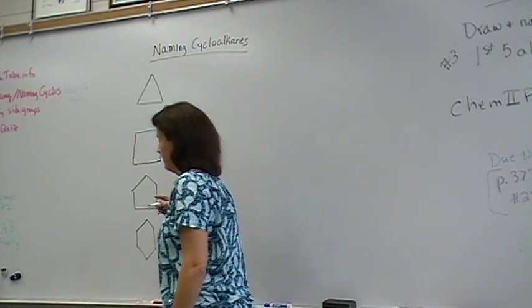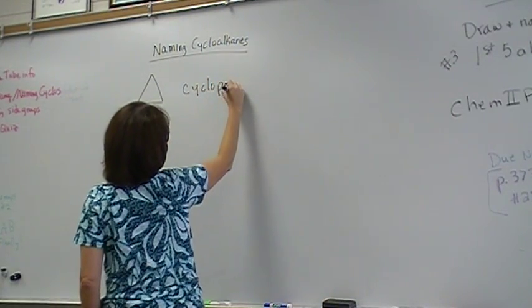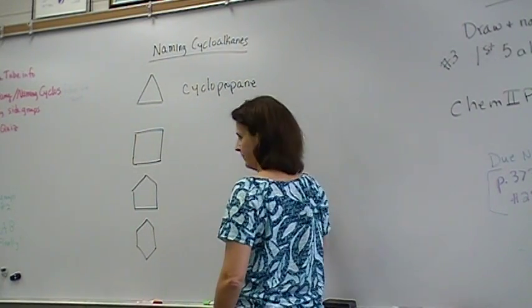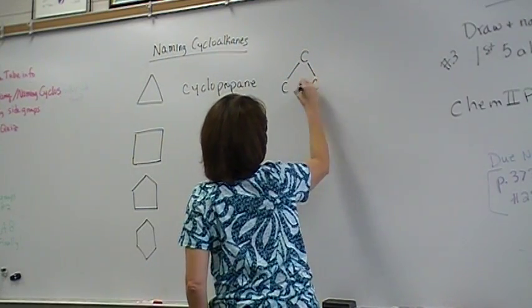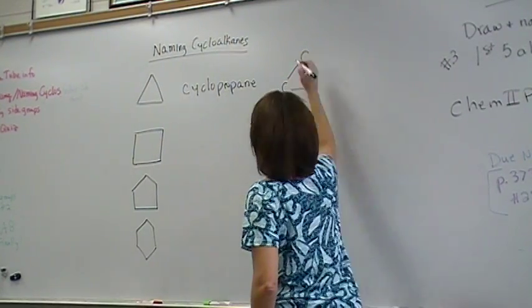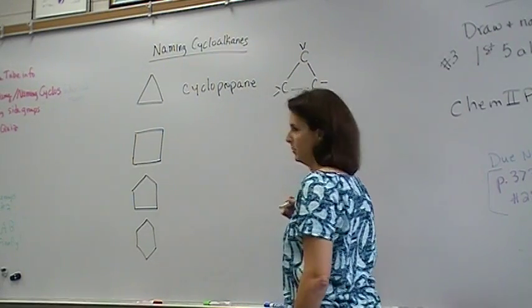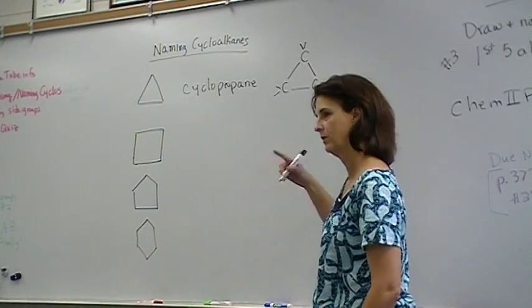And the names of them, this is called cyclopropane. And what you've got to remember, but you don't have to write four times, is that at the corner, or each corner there, there's a carbon with two hydrogens. We just don't write that, we just write the shape instead. So just remember, every corner is a carbon.